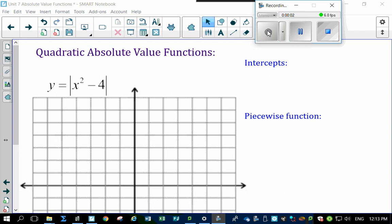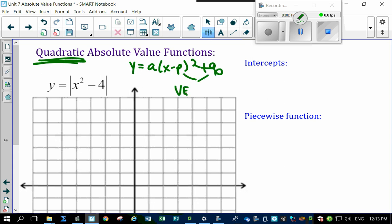So we did absolute value functions of linears. Now we got to look at quadratics. And if you remember what a quadratic is, that's that y equals ax minus p squared plus q stuff. Do you remember that? Where p and q was that vertex.